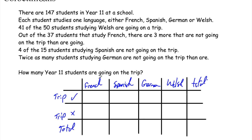I've created a two-way table with French, Spanish, German, Welsh and Total as columns, and Trip, No Trip and Total as rows. There are 147 students in total. 41 out of 50 Welsh students are going on the trip, so 9 are not. For French: 37 students total, with three more not going than going. Using algebra, if those going is x, those not going is x plus 3, giving 2x plus 3 equals 37, so 2x equals 34, x equals 17 going and 20 not going.